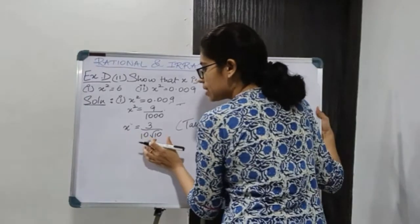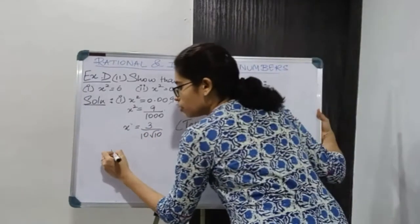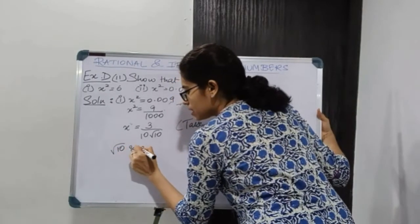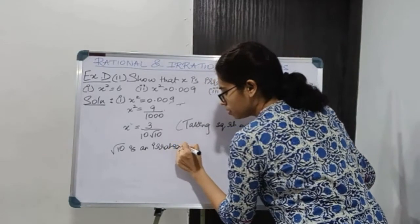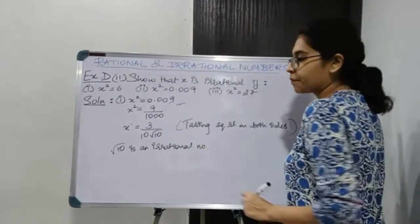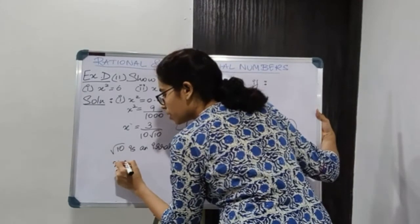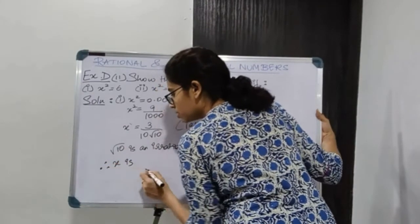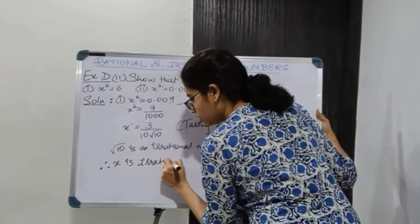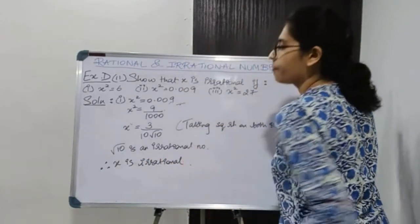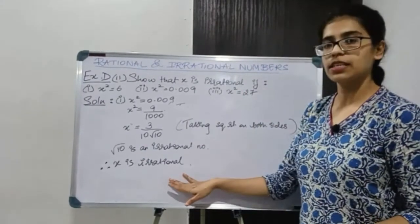Taking square root on both the sides, x is equal to 3 upon 10 root 10. Root 10 is an irrational number, so this is an irrational number. Therefore x is also an irrational number. So x is irrational.